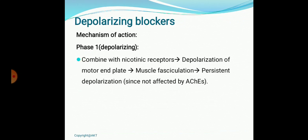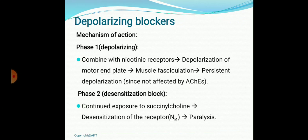The persistent depolarization continues because acetylcholinesterase cannot remove succinylcholine from the synapse. Phase two is a desensitization block — because of persistent continuous depolarization, the NM receptor finally fails to respond to any stimuli, analogous to a short circuit in an electrical line. Continuous exposure to succinylcholine leads to desensitization of the NM receptor and paralysis of skeletal muscle.